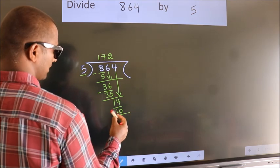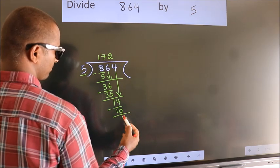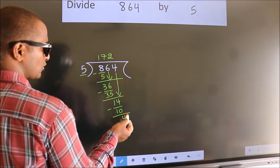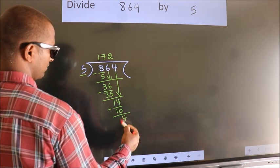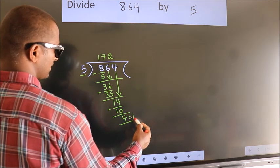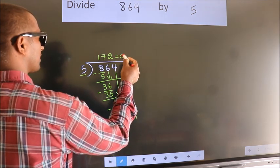Now, we subtract. We get 4. No more numbers to bring it down. So, we stop here. This is our remainder. This is our quotient.